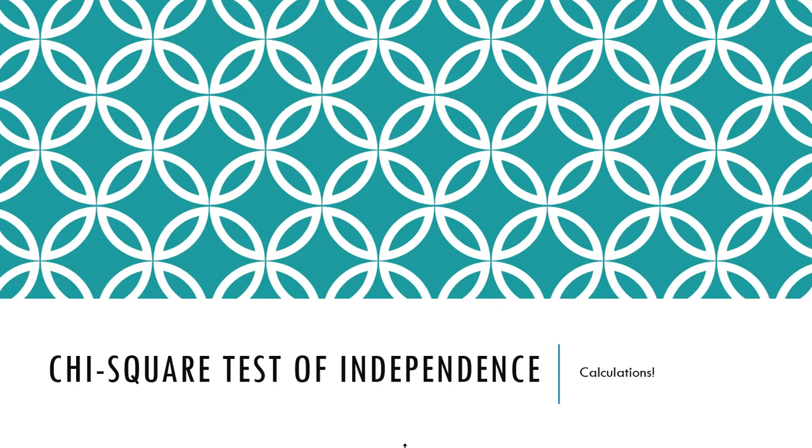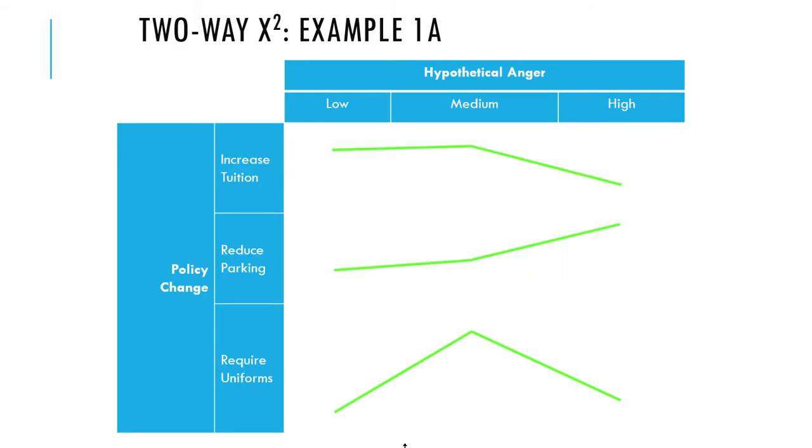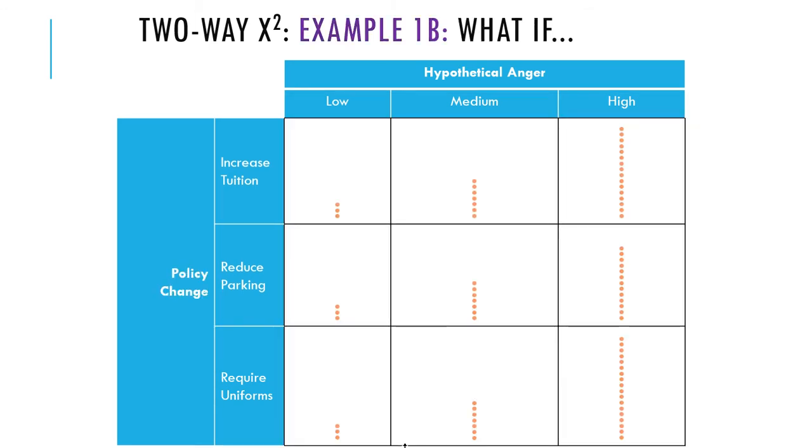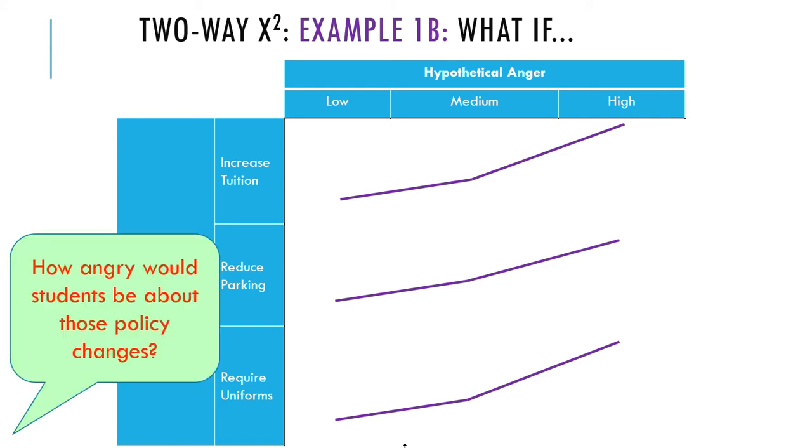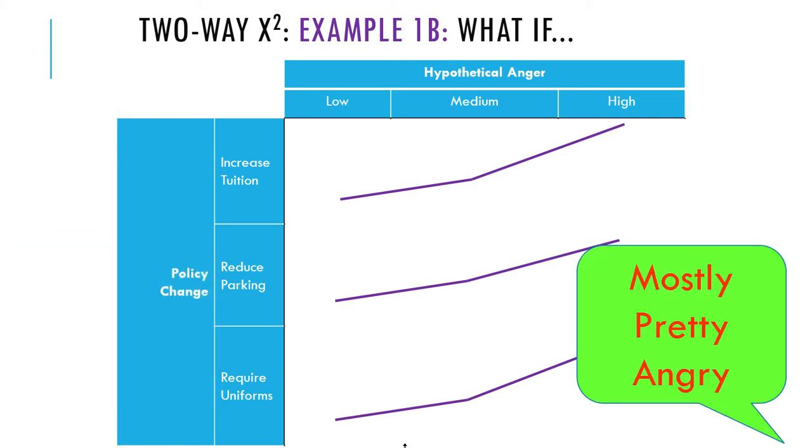Plowing ahead here, we're going to work through these examples, calculations and all. Going back through this example, reminding you that non-parallel lines mean dependence, parallel lines mean independence in a stacked bar chart.